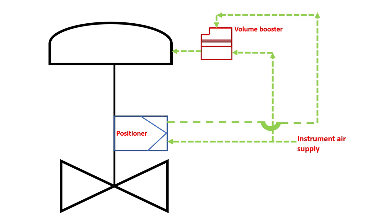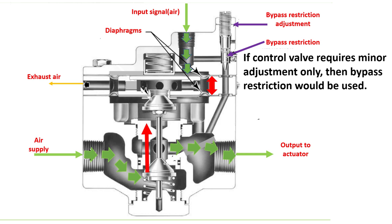What is the purpose of the bypass restriction component? For example, if your control valve is at 50% operation and the setpoint changes to only 50.5%, the input air signal will increase by only 0.5%. This small signal will not have much impact on the volume booster, and the volume booster does not necessarily require small signal amplifications. So this small input signal proportional to 0.5% will pass through the bypass restriction and go directly to the actuator without going through the diaphragm. This is the use of the bypass restriction.